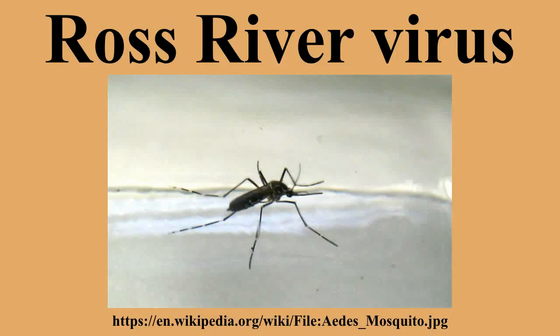The virions themselves contain the genome in a protein capsid 700 Angstroms in diameter. They are characterized by the presence of two glycoproteins embedded as trimeric dimers in a host-derived lipid envelope. Because RRV is transmitted by mosquitoes, it is considered an arbovirus — a non-taxonomic term for viruses borne by arthropod vectors.